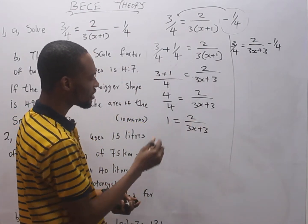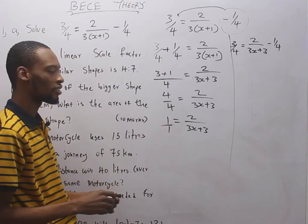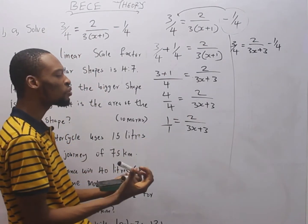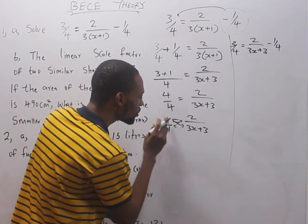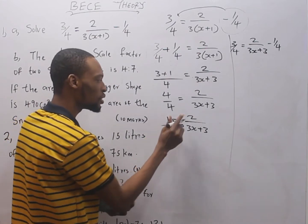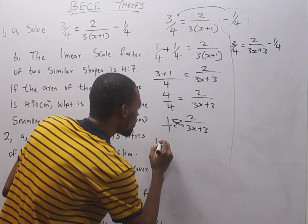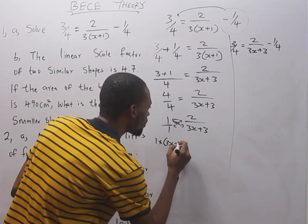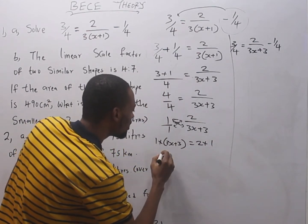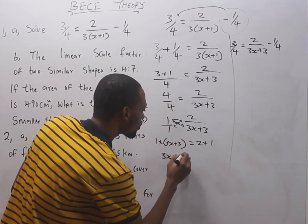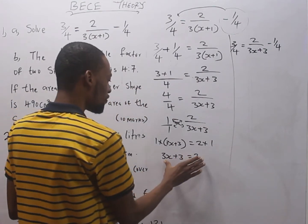Since this is a fraction, let's put this in form of fraction. 1 over 1. After this step, we can simply do what we call cross multiplication. We use this to multiply this. We use this to multiply this. So it is very valid.